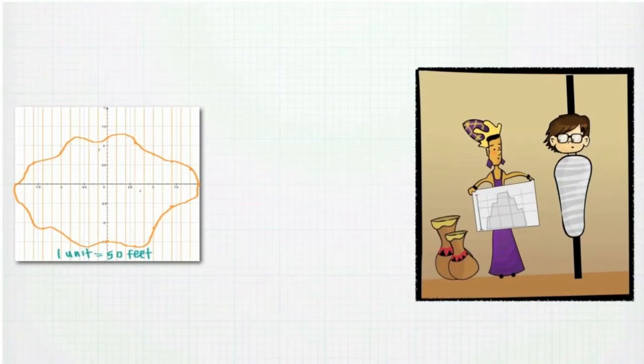The princess shows Willis a schematic that the mathematicians have made of a volcano. Thankfully, he just recently reviewed his calculus notes on trapezoidal rule, which he quickly realizes he can use to find the volume of the volcano.